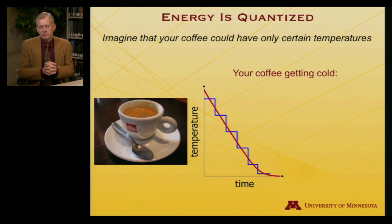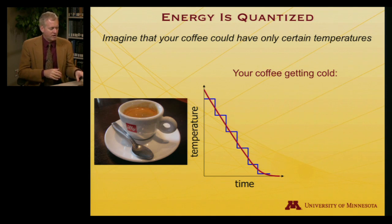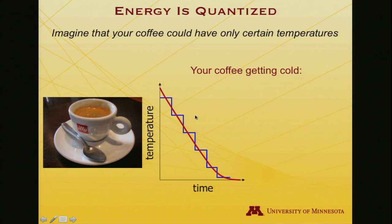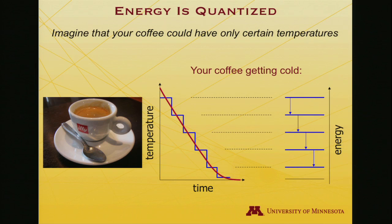But what if I told you that actually the curve was not smooth? It should be more staircase shaped. So we have a certain temperature for a while, and then it drops to another temperature, and then it drops to another temperature, and only these discrete levels of temperature are allowed.